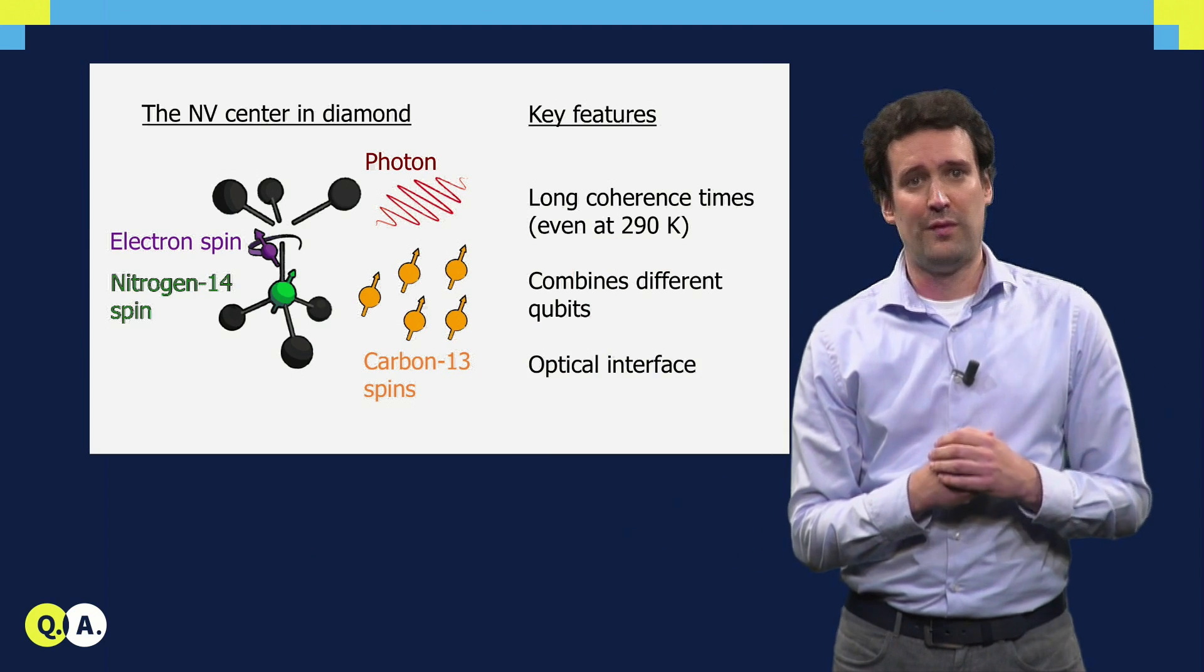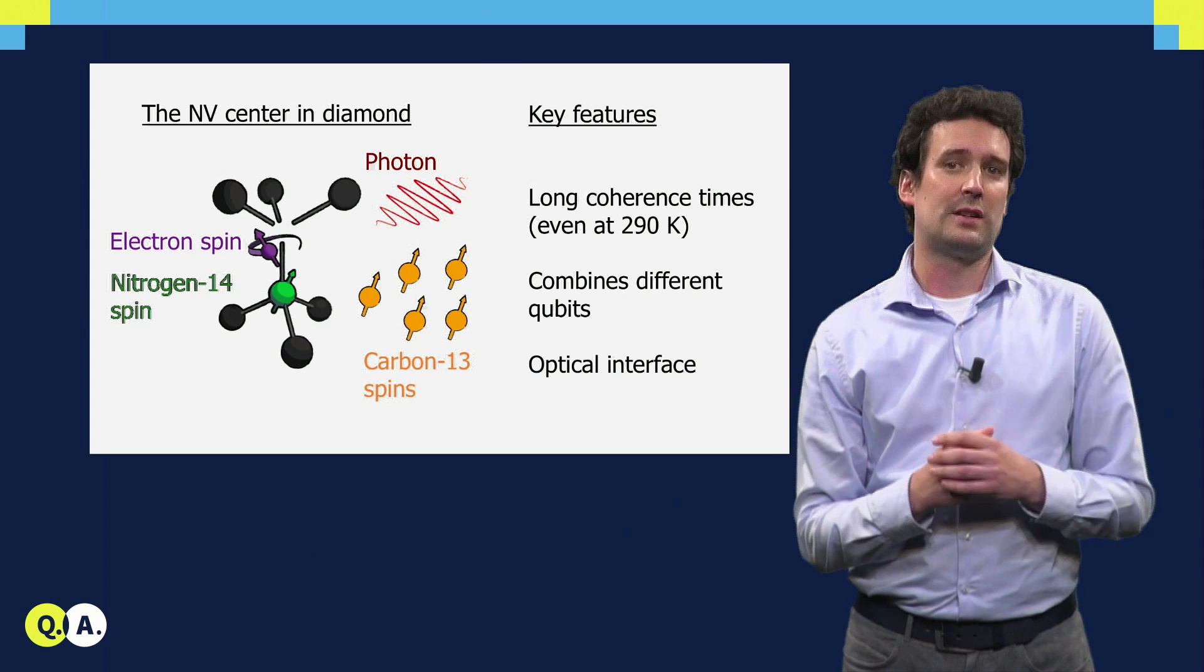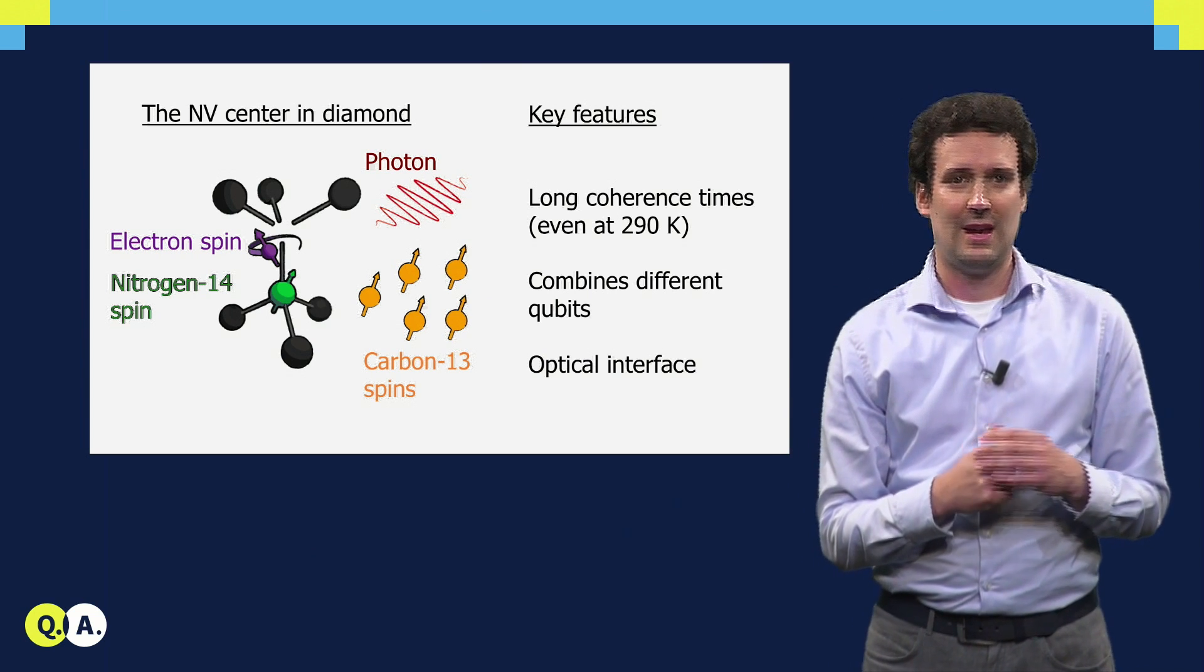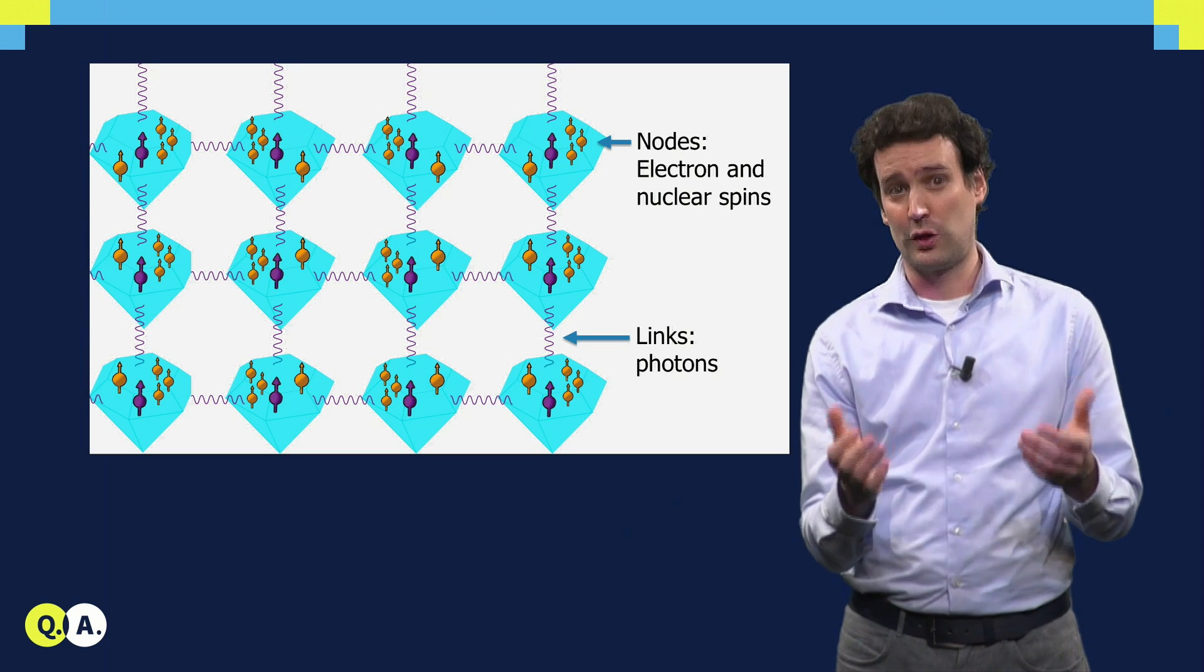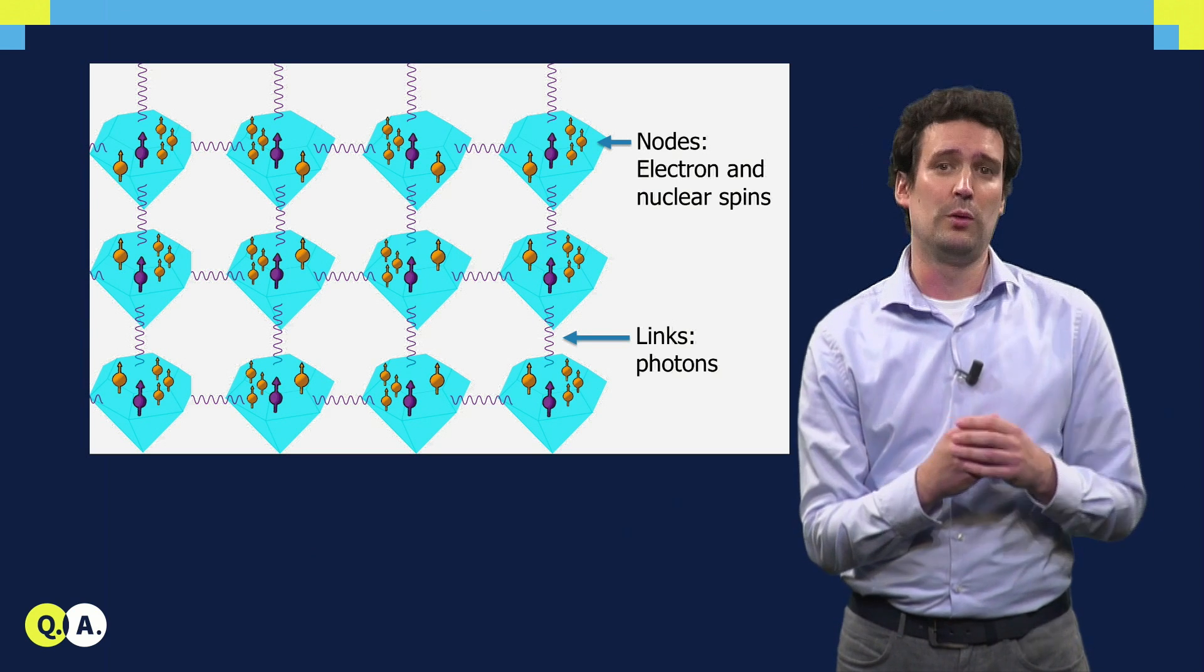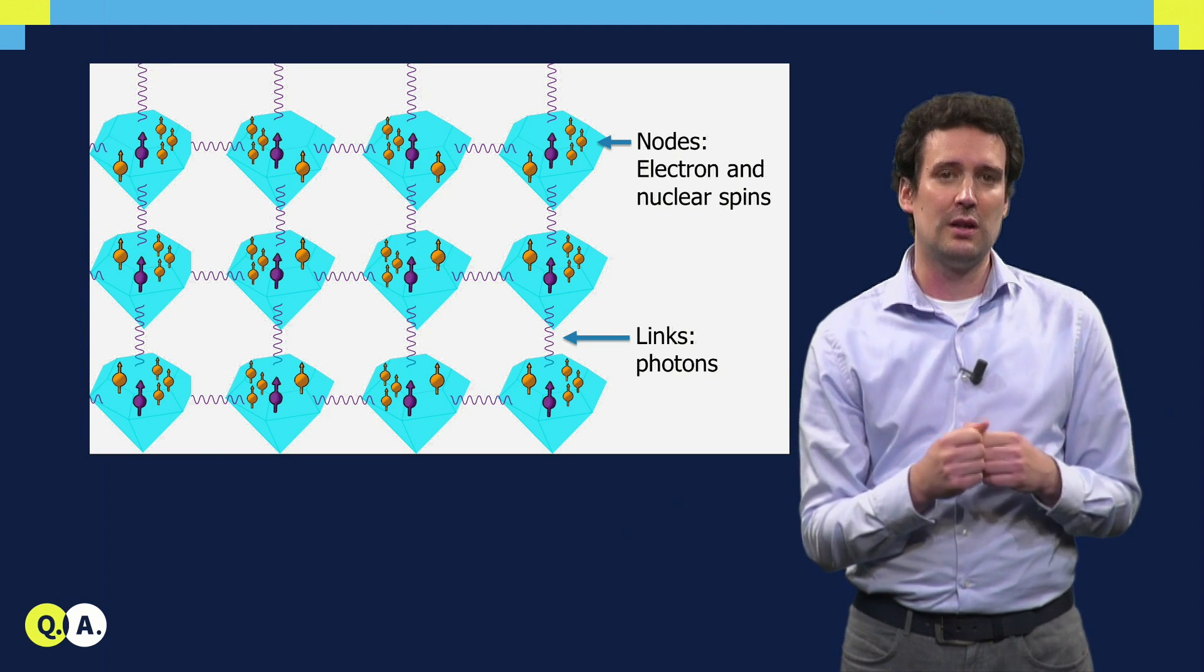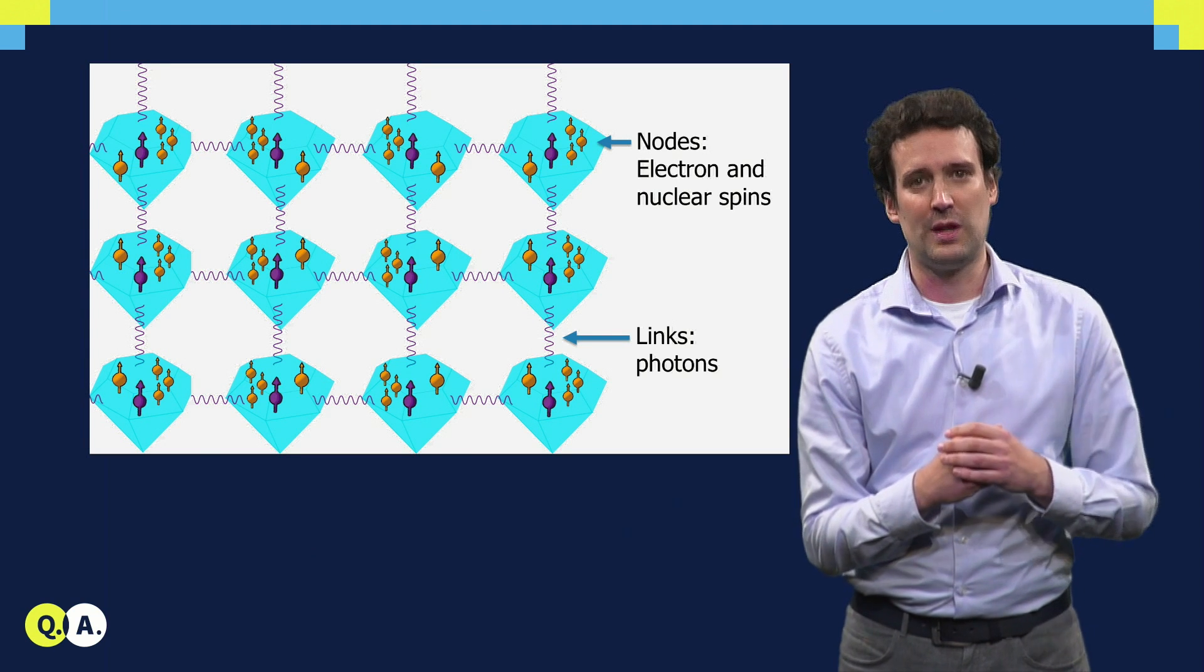With such a hybrid system of photons and spins, we can create quantum networks. In a quantum network, we have nodes that consist of multiple spins or qubits that can store and process quantum states, and we can then link these together using optics into a network.